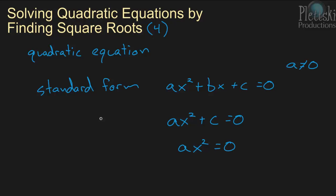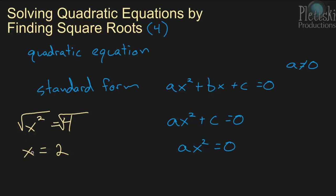Let's take a look at an example. Say we have x squared equals four. The way we solve this: first, get the x squared term by itself on one side of the equation, then take the square root of both sides. We already have x squared by itself, so we take the square root of x squared, which is x, and the square root of four, which is two. So x equals two.